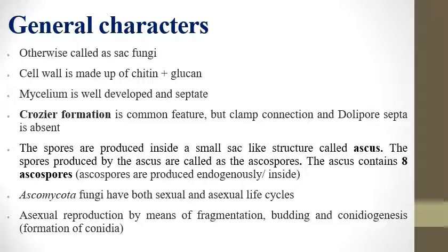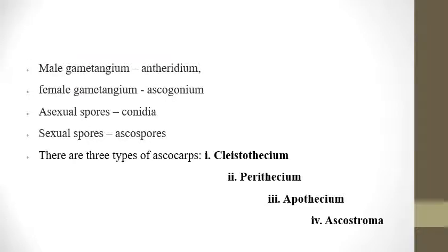Ascomycota can reproduce in three — mostly four types of sexual fruiting bodies: Cleistothecium, Perithecium, Apothecium, and Ascostroma. These are sexual fruiting bodies produced by the Ascomycota group. We will see each one in detail.